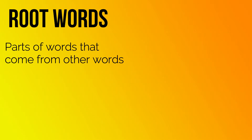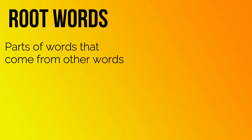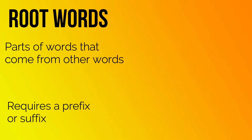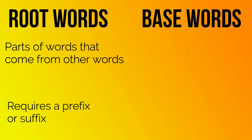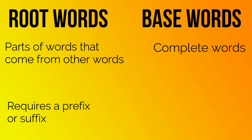Prefixes and suffixes have to have a root word or a base word in order to be a complete word. Root words are words that come from other words, but have to have other parts in order to be a complete word. Base words are complete words on their own.